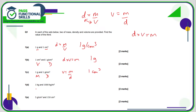Here we've got mass and density, so the volume is mass divided by density again. So it's a mass of 1 kilo divided by 1000, and 1 divided by 1000 is 0.001 cubic metres.